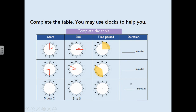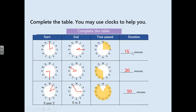Let's check the answers. The first duration was 15 minutes. The second was 20 minutes. For the last one, the minute hand is on 1 — that's 5 past 2, with the hour hand just past two. The end time is 5 minutes to 3, with the minute hand on 11 and the hour hand coming up to 3. So the time passed was 50 minutes.